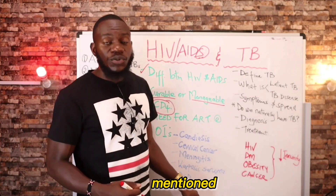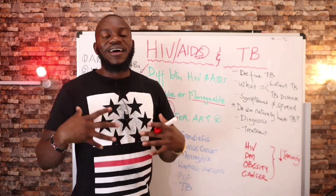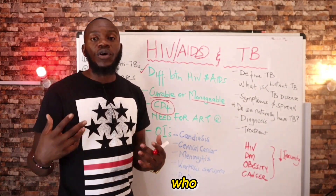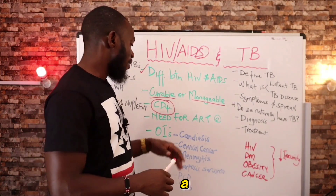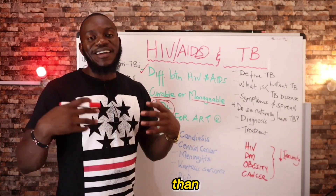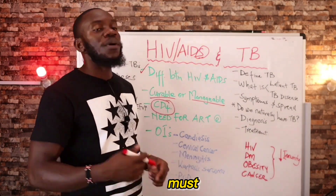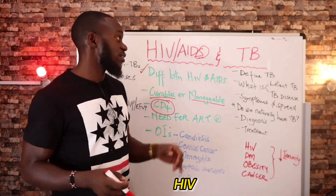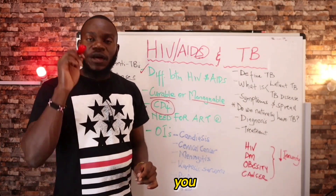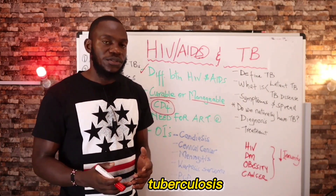One of the opportunistic infections I mentioned is tuberculosis. TB occurs more in people who are living with HIV — they have a higher chance of getting tuberculosis than others. I'm not saying that if you have HIV you must get tuberculosis. HIV kills your immunity and TB can come and attack you. I'm also not saying that people who don't have HIV cannot contract tuberculosis.